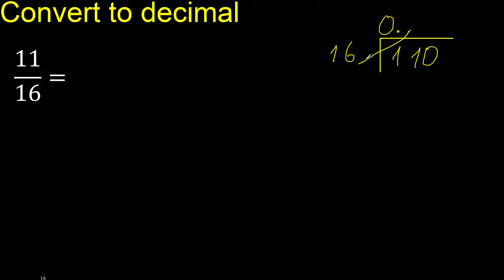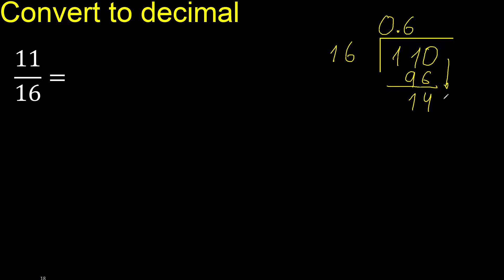16 multiply by 7 is greater, therefore multiply by 6 — okay, is not greater. Subtract. 14. There is no number, therefore complete — complete with zero. 140: 16 multiply by which number? 16 multiply by 9 is greater, 16 multiply by 8 is okay.